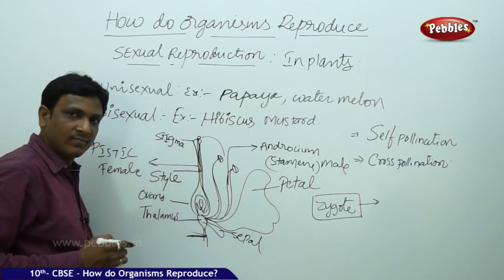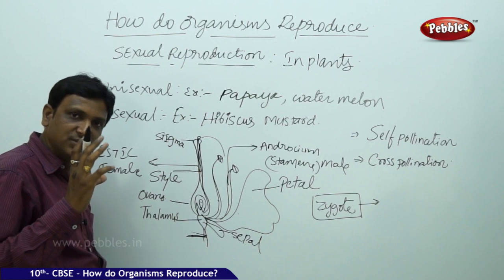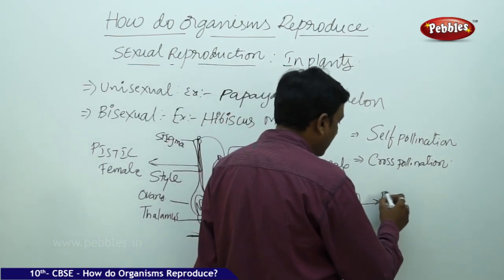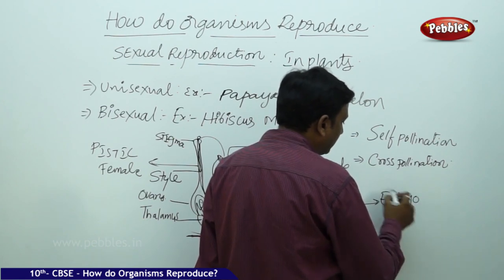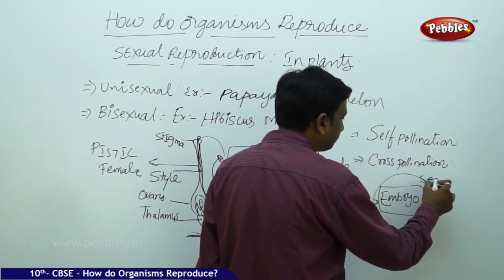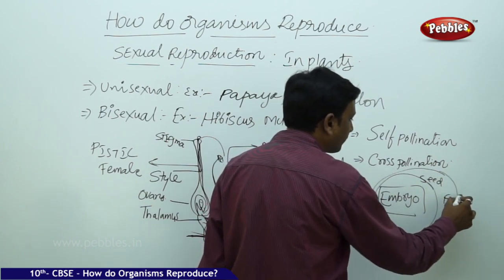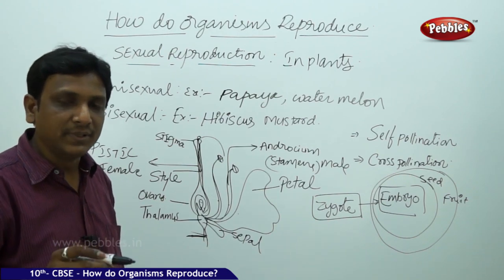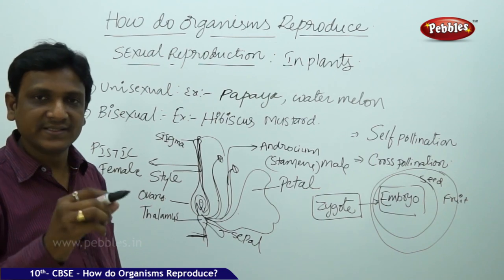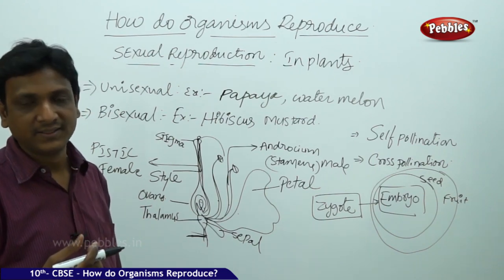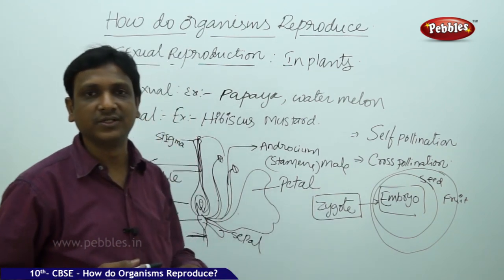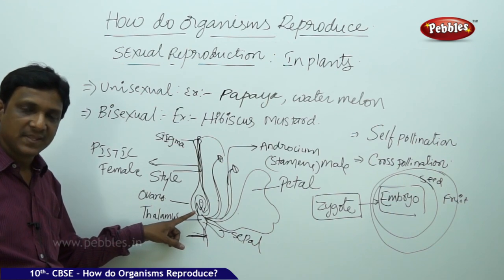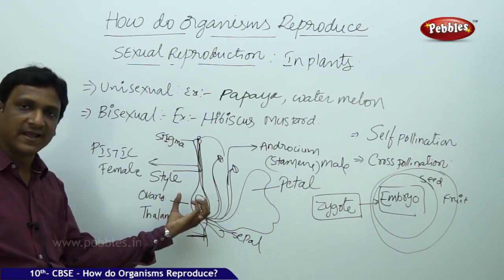Once the zygote is formed inside the ovule, the flower loses all its parts. The ovary increases in size and becomes the fruit. The ovule becomes the seed. The zygote becomes the embryo. The embryo is covered by the seed, which is covered by the fruit. So the fruit consists of the seed, and the seed consists of the embryo. The seed also contains cotyledons to provide food to the embryo.